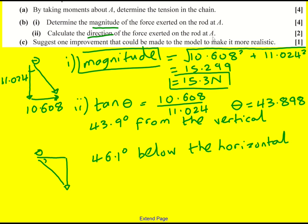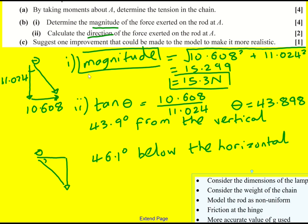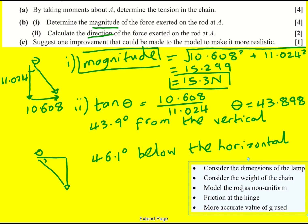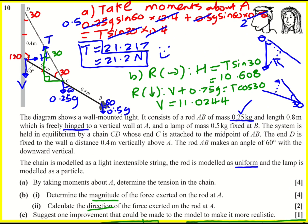Finally, suggest one improvement that could be made to the model to make it more realistic. I went with give the lamp dimensions because we're modeling as a particle. Some other options would be to consider the weight of the chain, model the rod as non-uniform, have friction at the hinge, more accurate value of G. There's other answers as well, but those are just some to consider. Okay, thanks for watching this. I hope this helps. Keep going.